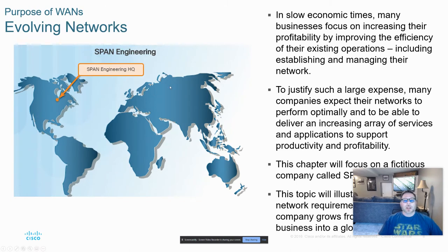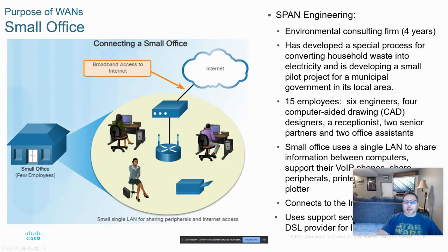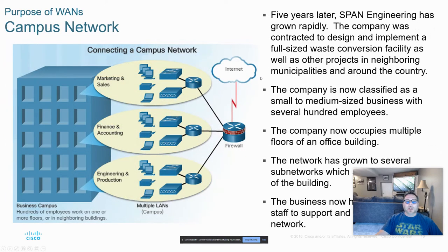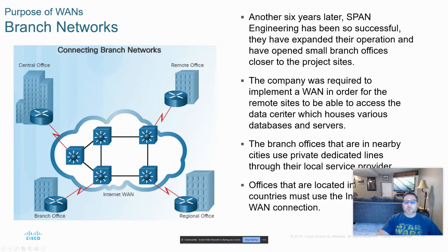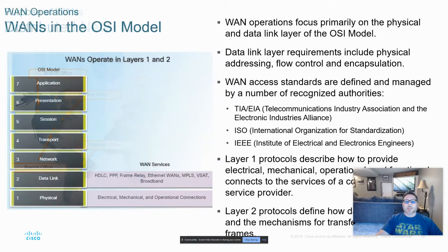The chapter uses a fictitious company called SPAN Engineering as a use case, applying the topics to this growing company and how they might utilize some of the technologies. These next several slides talk about the inception of the company being fairly small, and then as you go through the chapter, you can see they're growing and scaling their network across multiple locations, eventually becoming a global company that relies more on WAN technologies.